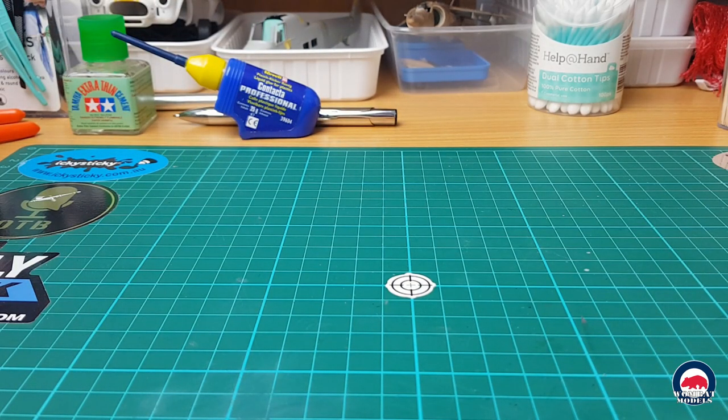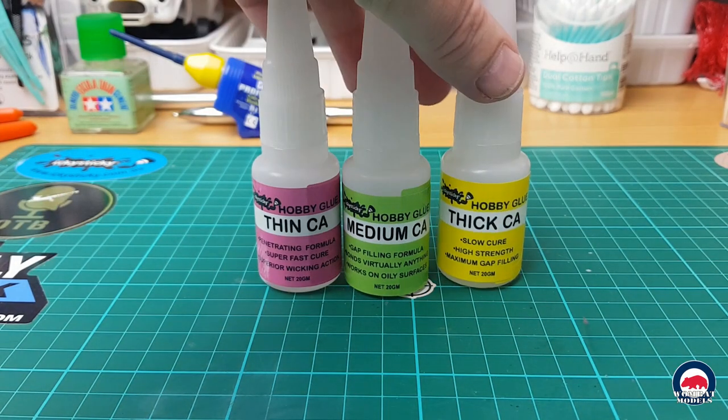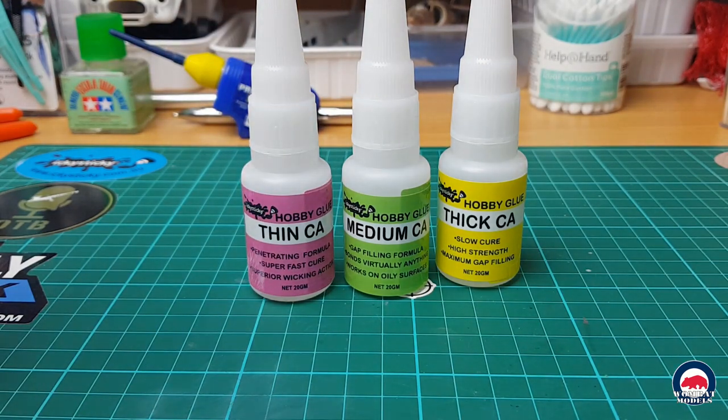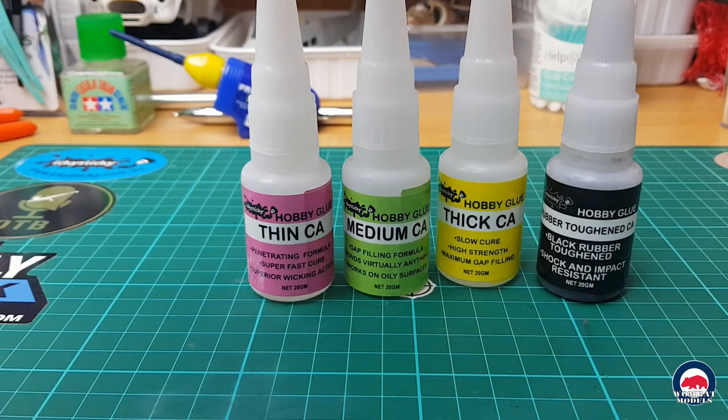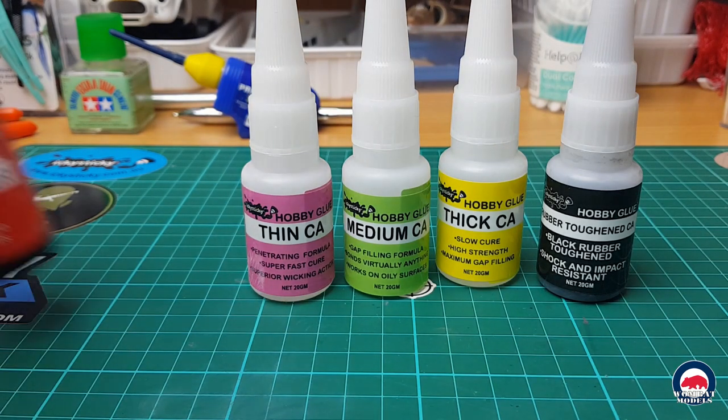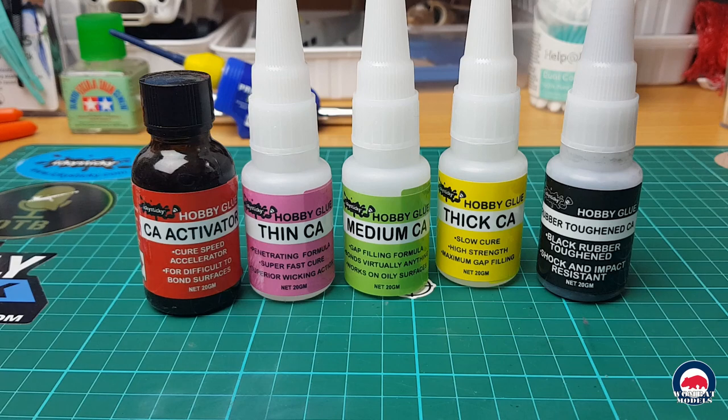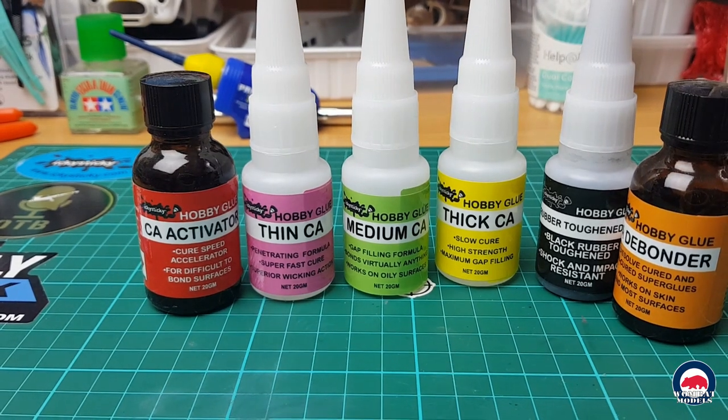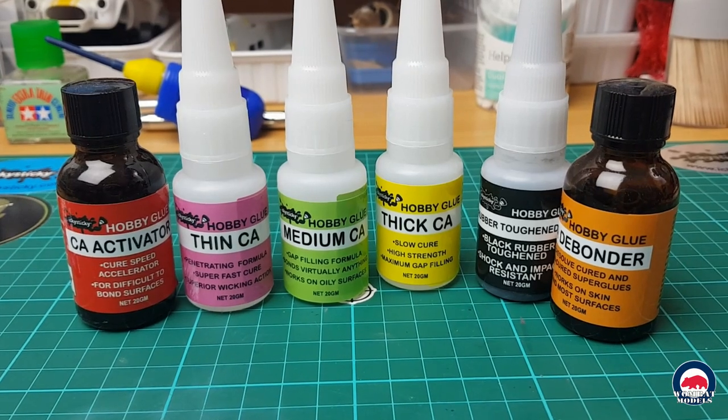When it comes to superglue or CA, I've got the icky sticky range. So I've got thin, medium, thick. Also got the rubber toughened black CA. And of course we have the CA activator. And if you screw things up totally, we've got the CA debonder.